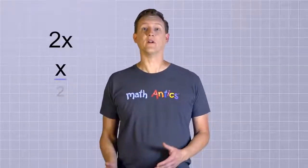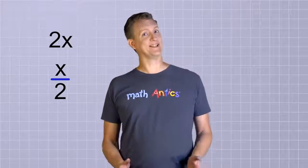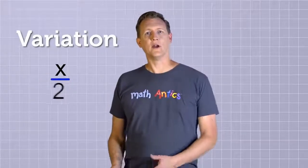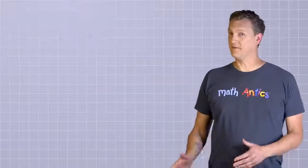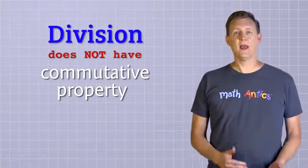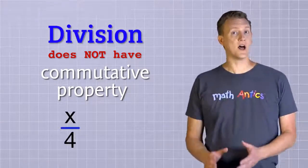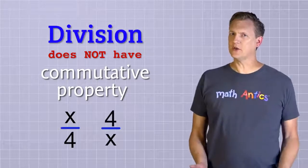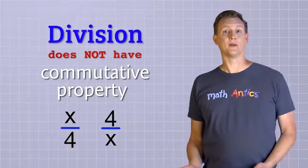Great! That's how you solve simple equations where an unknown is being multiplied by a number or divided by a number. But just like with subtraction in the last video, with division, there's a tricky variation that I need to tell you about. What if you have an equation where a number is being divided by an unknown? Since division does not have the commutative property, x over 4 is not the same thing as 4 over x. So what do we do if the unknown is on the bottom, like in this problem?